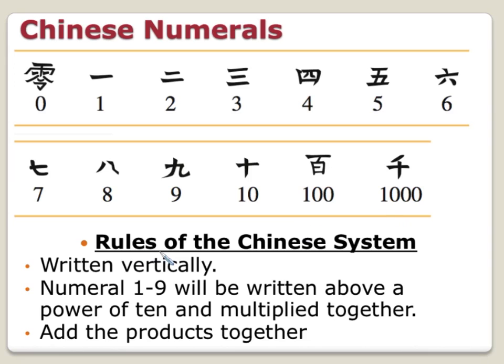Now the rules of the Chinese system: we write our numerals vertically. You take numerals 1 through 9 written above a power of 10, and those get multiplied together. Then we add the products of all of these together. So let's try some examples.